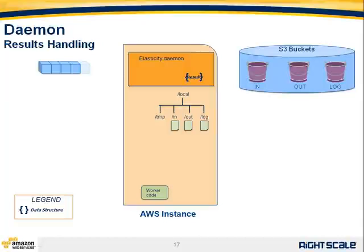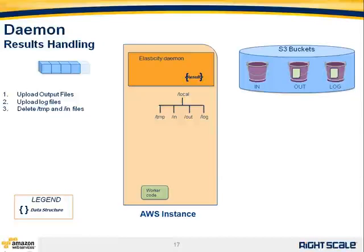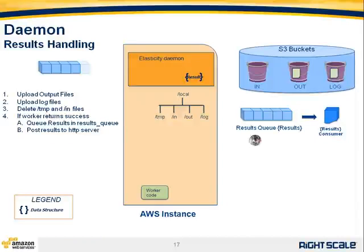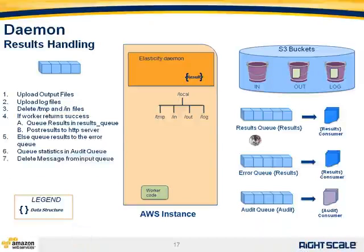The final step is results handling. Output and log files are uploaded back into the respective S3 buckets. Temporary input files are deleted from the associated directory. The RightScale system then leverages pre-configured queues: successful results are placed in the results queue, which can also be posted to a server; error results go into a specific error queue automatically created by RightScale; and all queue statistics are placed in the audit queue for analysis. Finally, the message is deleted from the input queue.